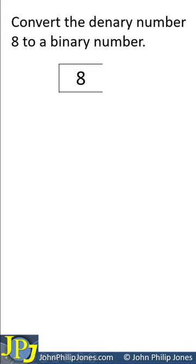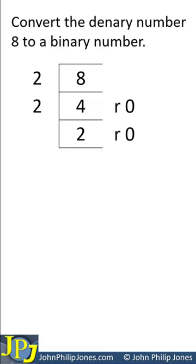Write down the 8 and continually divide by 2 as follows. 2 into 8 goes 4 times with no remainder because it goes exactly. 2 into 4 goes twice with no remainder.